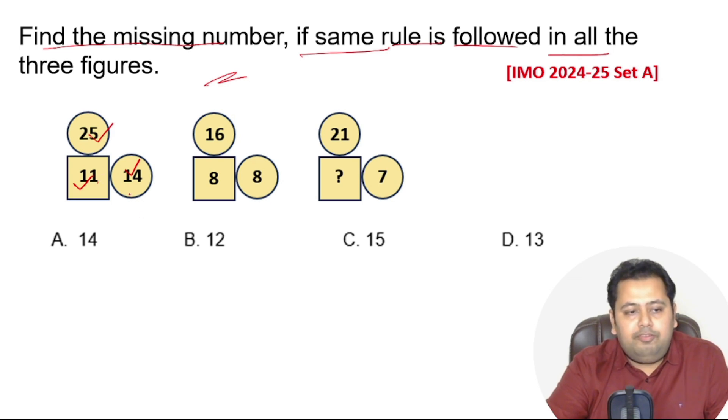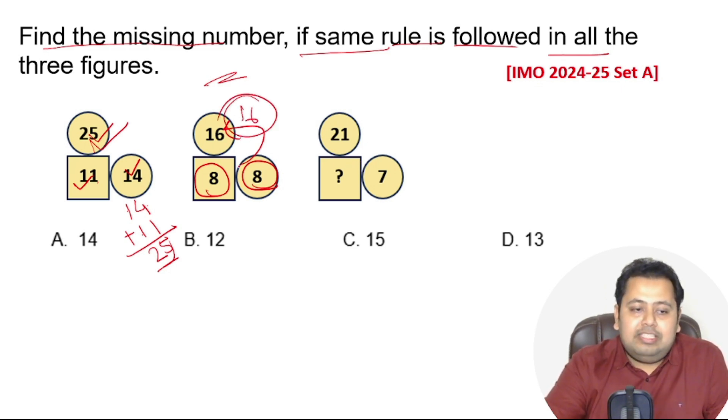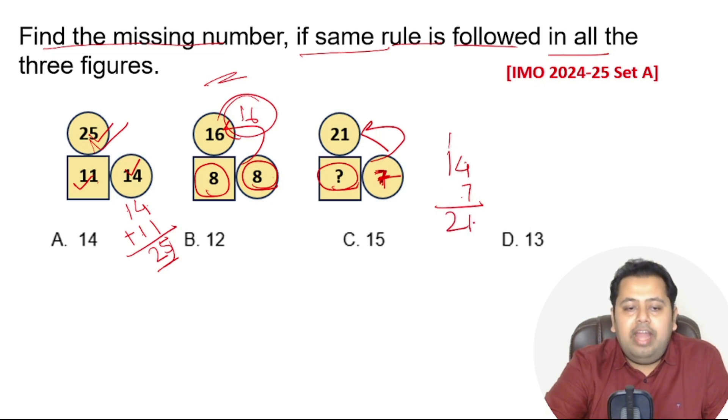Now this is 25, this is 14, this is 11. If you observe closely, 14 plus 11 is nothing but 4 plus 1 is 5, 1 plus 1 is 2, so that is 25. Here again, if you see 8 plus 8 plus 8 is nothing but 16, right? So if the same pattern follows, what should be added to 7 that it gives us 21?